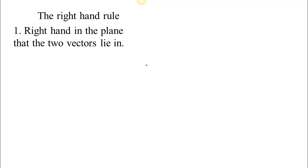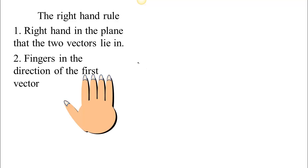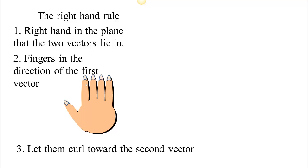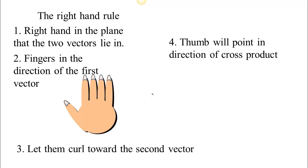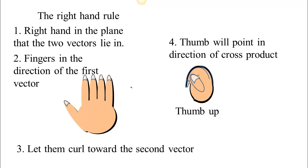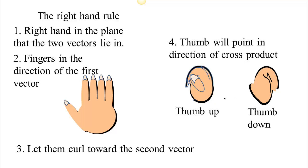Here's how the right hand rule works. Put your right hand — that's why it's called the right hand rule — in the plane that the two vectors lie in. Put your fingers in the direction of the first vector in the cross product, then curl them toward the second vector. Your thumb will then point in the direction of the cross product. Either you'll be curling toward your thumb and your thumb comes up, or if the other vector is over on the other side, you'll curl away and your thumb points down.